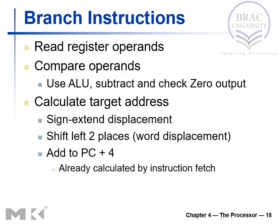Branch instructions read the register operands — the values stored in two registers — and compare them. We need the help of the ALU because those two values will be subtracted and the output checked for zero. If the output is zero, the two values are equal. If the output is not zero, they are not equal. The zero output determines whether to branch.